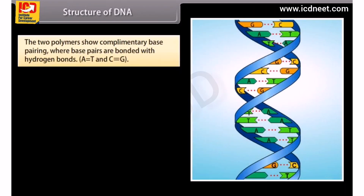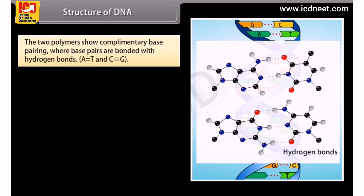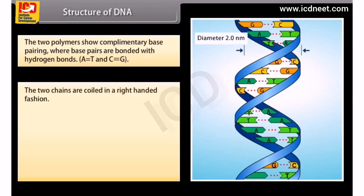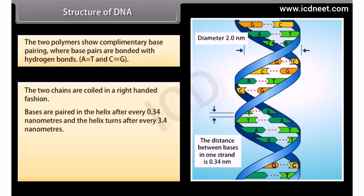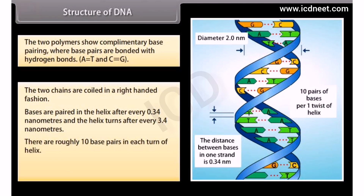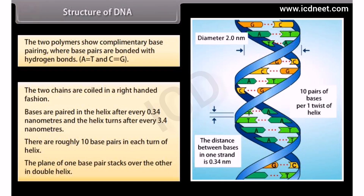The two polymers show complementary base pairing, where base pairs are bonded with hydrogen bonds. The two chains are coiled in a right-handed fashion. Bases are paired in the helix after every 0.34 nanometers, and the helix turns after every 3.4 nanometers. There are roughly 10 base pairs in each turn of the helix. The plane of one base pair stacks over the other in the double helix.